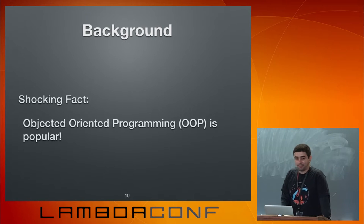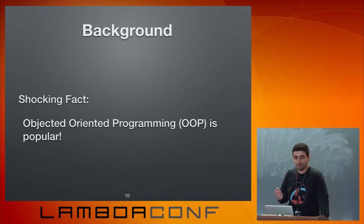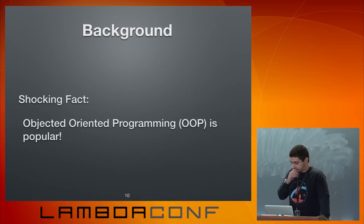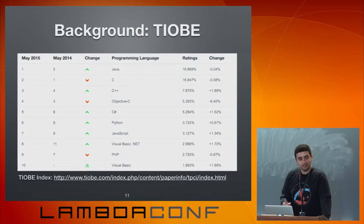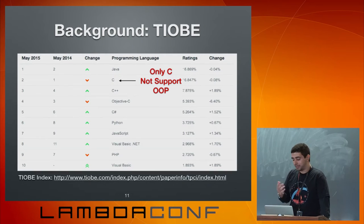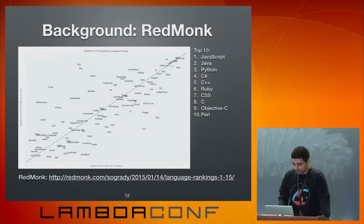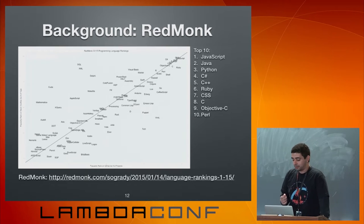OOP is very popular. Many — probably all of you — have some knowledge or experience with object-oriented programming. Looking at the TIOBE rank this month, the top ten languages have only one that does not support object-oriented programming. Java, C++, Objective-C, C-Sharp — all these languages have some kind of support for OOP. Using the RedMonk rank, the top ten has only two that don't support OOP.